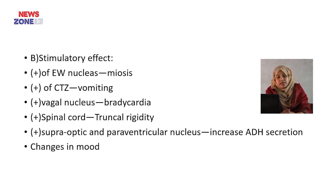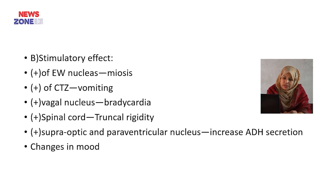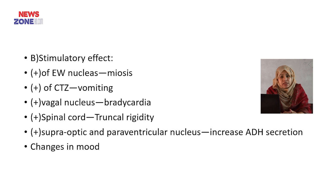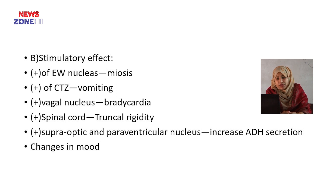Number 2 is stimulation of the CTZ — the chemoreceptor trigger zone — resulting in vomiting. Number 3 is stimulation of the vagus nucleus, causing bradycardia. Number 4 is spinal cord contraction, resulting in truncal rigidity. Therefore, in case of any type of epilepsy, convulsion, or truncal rigidity, morphine cannot be used.